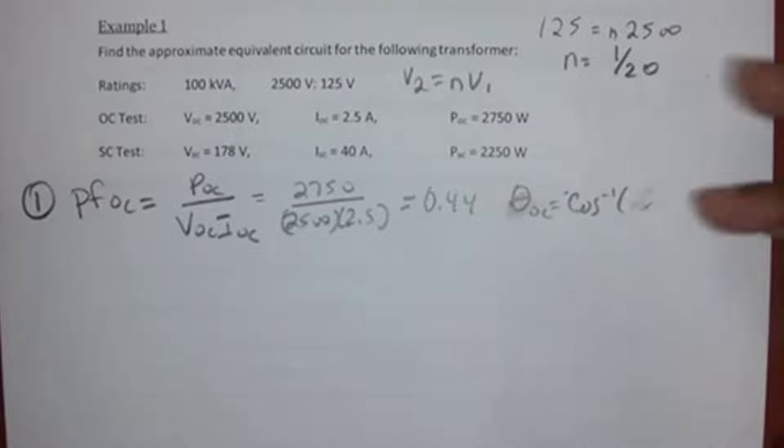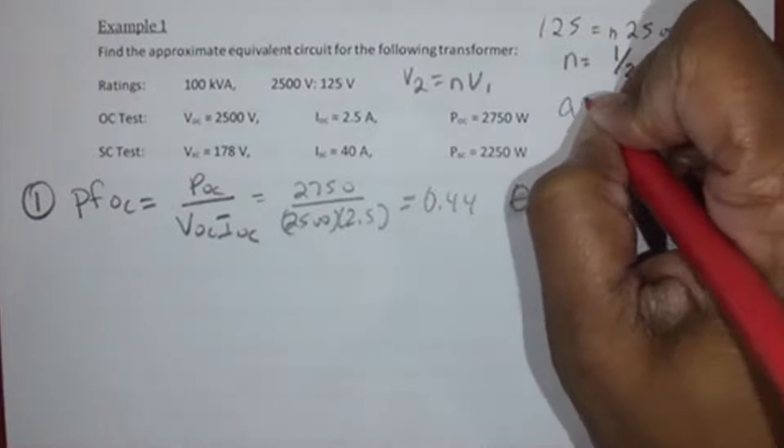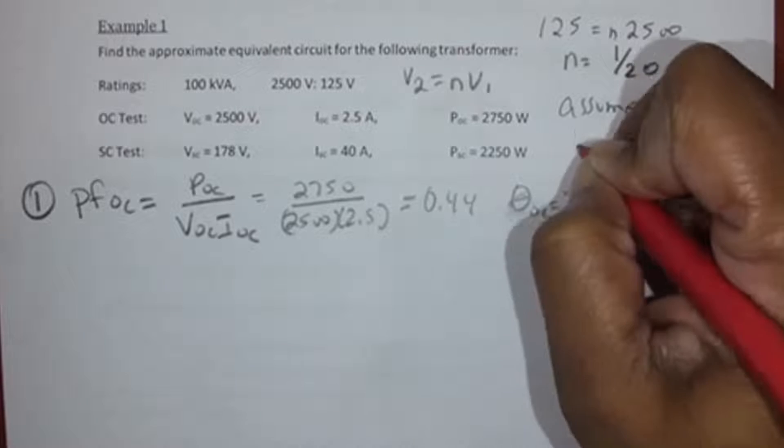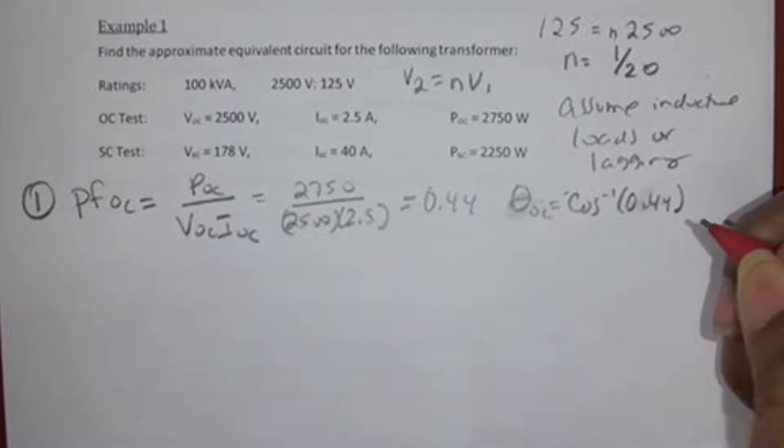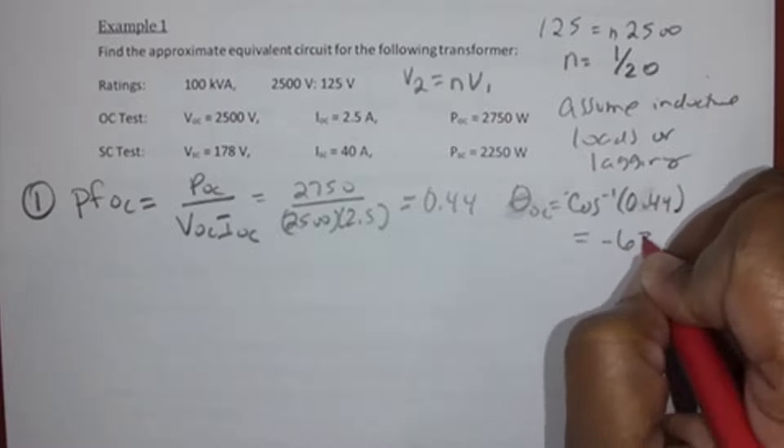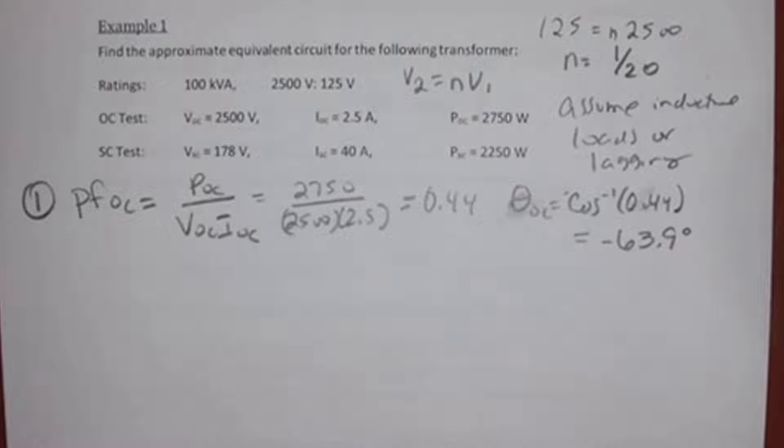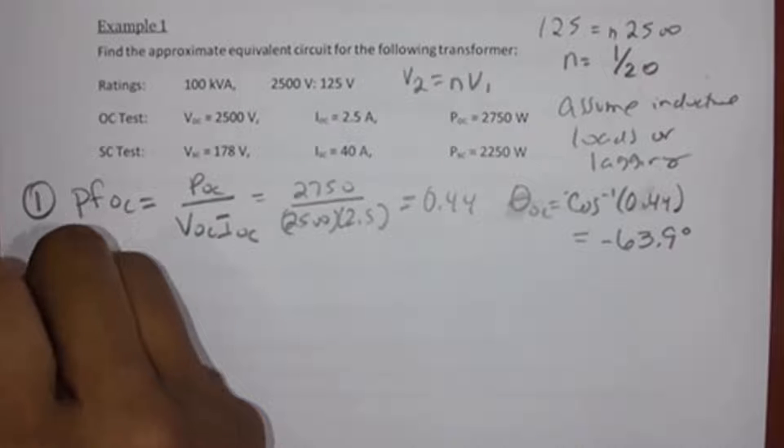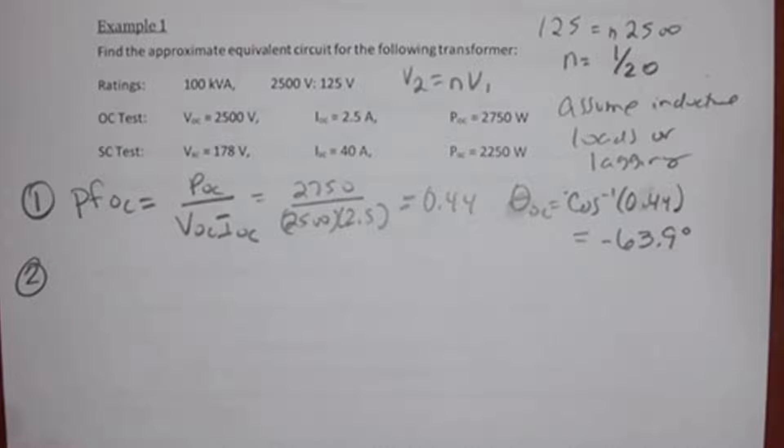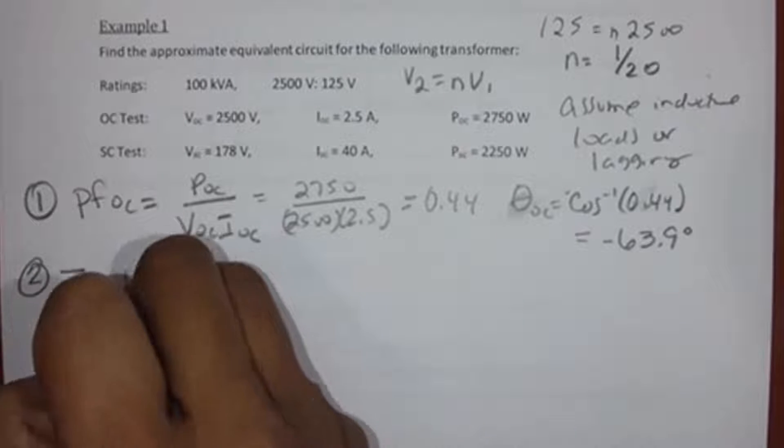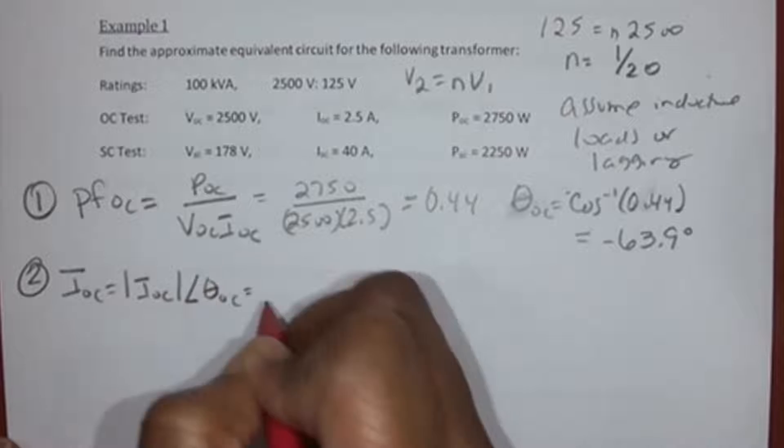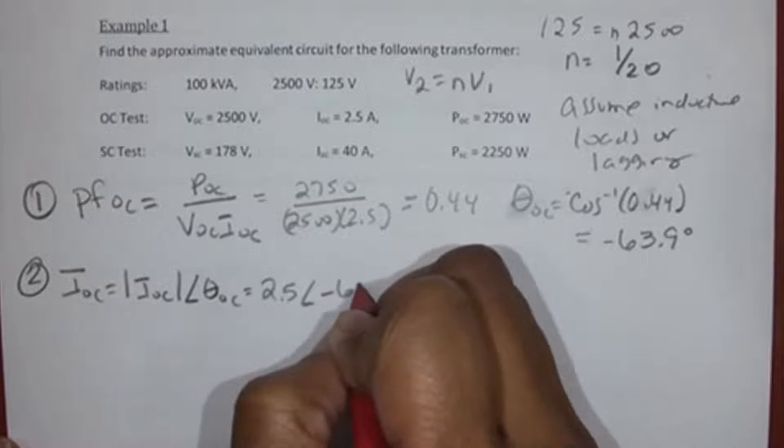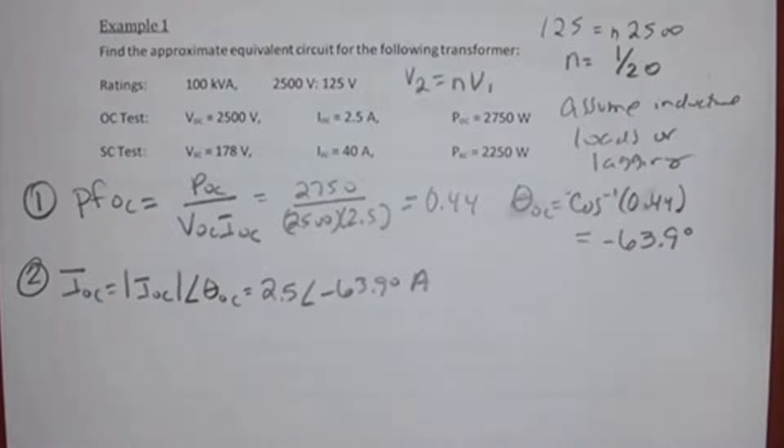Theta open circuit is the arc cosine of 0.44. Why are we assuming this lag? We're assuming all these loads are lagging. It's just a rule of thumb. We're assuming inductive loads. So negative 63.9 degrees. That's step one. Step two is to find IOC. IOC is going to be the magnitude of IOC at the angle theta OC. So that's going to be 2.5 with an angle of negative 63.9 degrees.